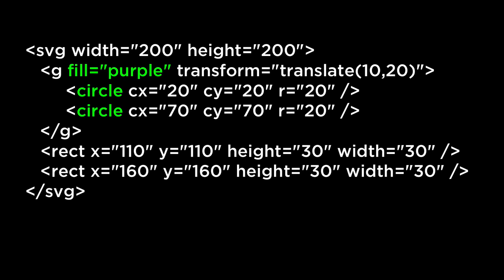One: grouping a set of SVG elements with the same attributes, which then lets you apply styling like fill purple to all the group members. The second main reason to use the SVG group element is for the transform capabilities.